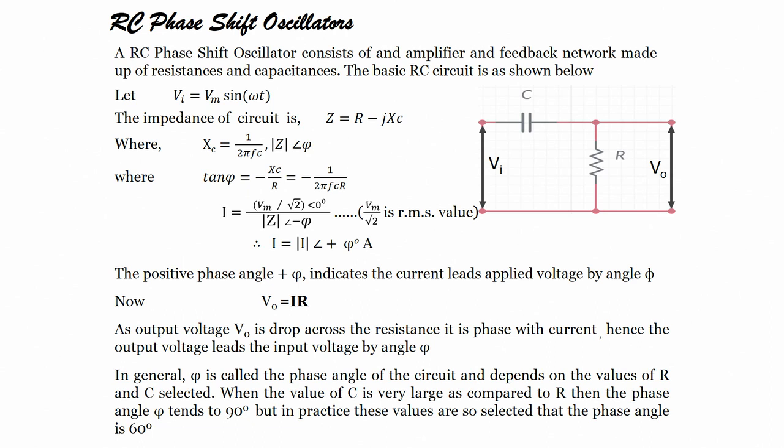These are the types and classification of oscillators. Now let us see the first oscillator, which is the RC phase shift oscillator. RC phase shift oscillators consist of an amplifier and a feedback network made up of resistors and capacitances. The basic RC circuit is shown here.